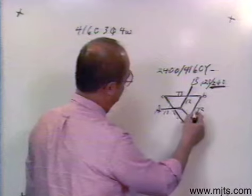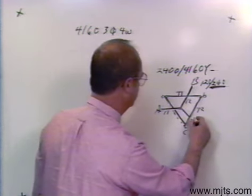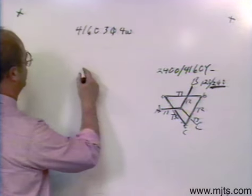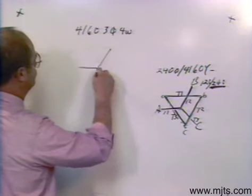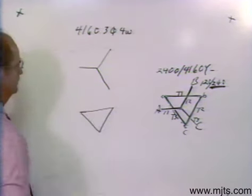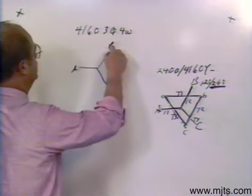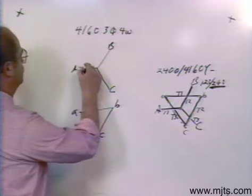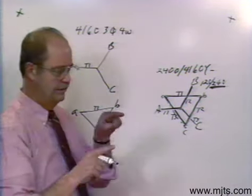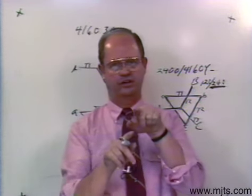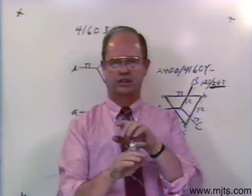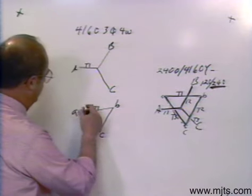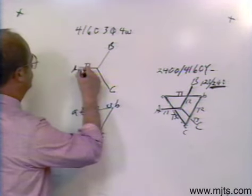So if this happens to be transformer one down here, then this one going through here has to be transformer one up here. If this one on the high side happens to be transformer two, then this one over here has to be transformer two on the low side. We've gone from here to there, so this one has to be transformer three. On the high side we know we have this situation and on the low side we have this situation — A, B, C always clockwise. If this is transformer one on the high side and transformer one on the low side, their vectors have to be going in the same geographic direction. So if I go X1 to X3, then this one has to go H1 to H2.